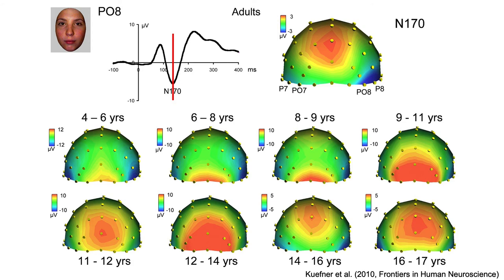Here are the scalp distributions for the face stimuli at the time of the N170, viewed from the back of the head. Just as in previous studies, there were huge differences across ages. But do these differences reflect changes in face processing, or changes in non-specific visual processes?